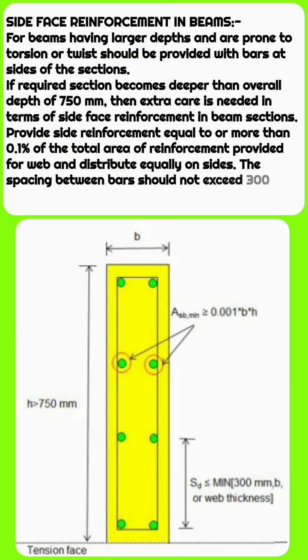In terms of side face reinforcement in beam sections, provide side reinforcement equal to or more than 0.1% of the total area of reinforcement provided for web and distribute equally on sides.